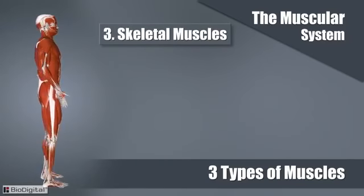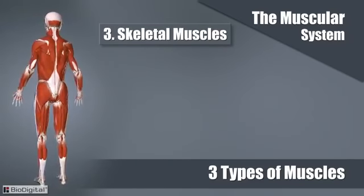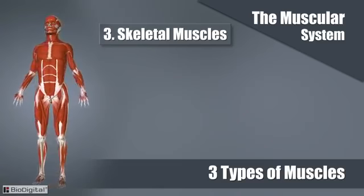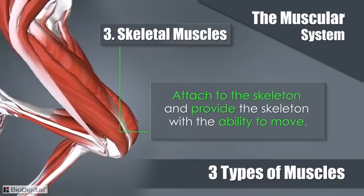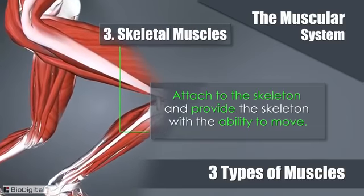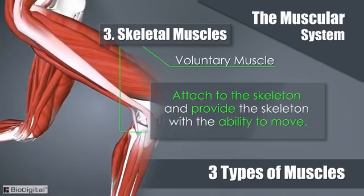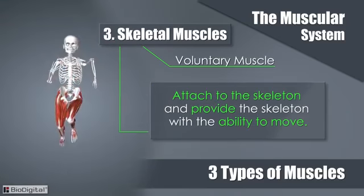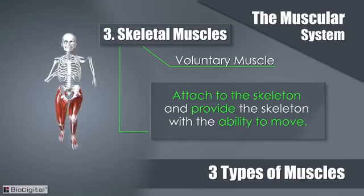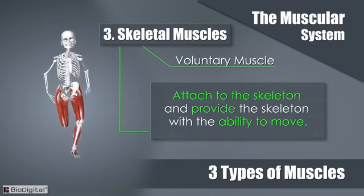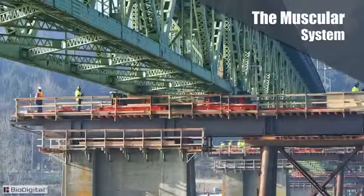The third type of muscle is the skeletal muscle. These are what we typically think of when talking about muscles. They are attached to the skeleton and provide it with the ability to move. The skeletal muscles are classified as voluntary because we have to make a conscious effort or decision to make them move.